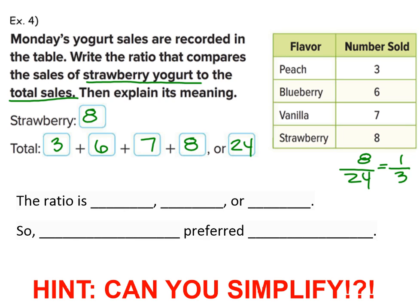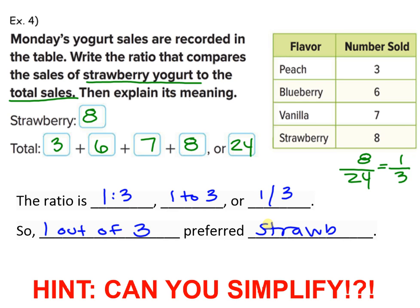Eight over 24 would simplify to one over three. So the ratio can be written as one colon three, one to three, or one slash three. When you go to explain what this means, it means one out of three preferred which flavor? Go back to your original problem — what was the ratio you were comparing? Strawberry.